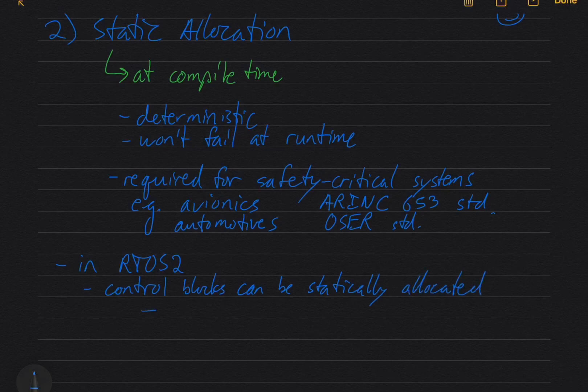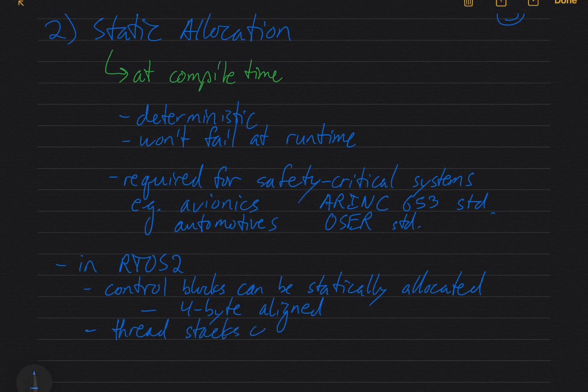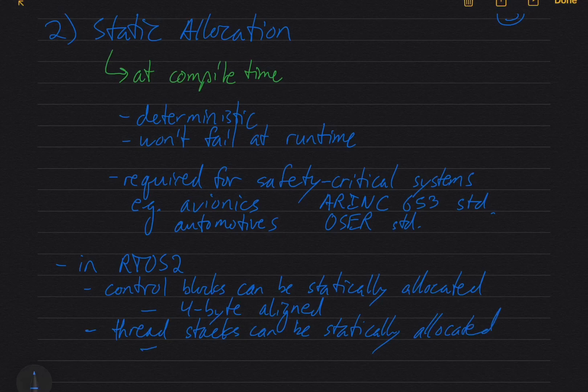They must be four byte aligned or word aligned. Thread stacks can be statically allocated and the stacks must be eight byte aligned. That's a requirement of the ARM processor, something to do with the way that it handles exceptions requiring that threads be eight byte aligned. So we're going to look at a code example on the next page.